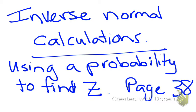So what we've been doing till now is we've been giving you an X value, giving you the mean and the standard deviation, and asking you to find a probability. But what we want to do now is reverse that process, going from a probability and working backwards to find out what the Z value is.